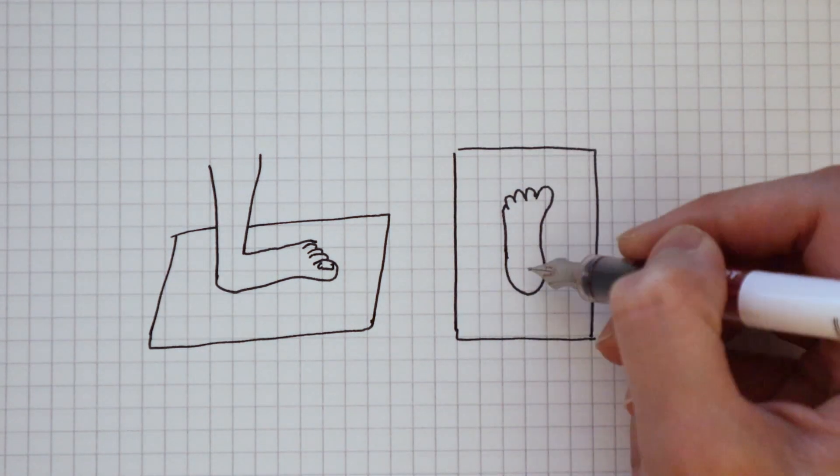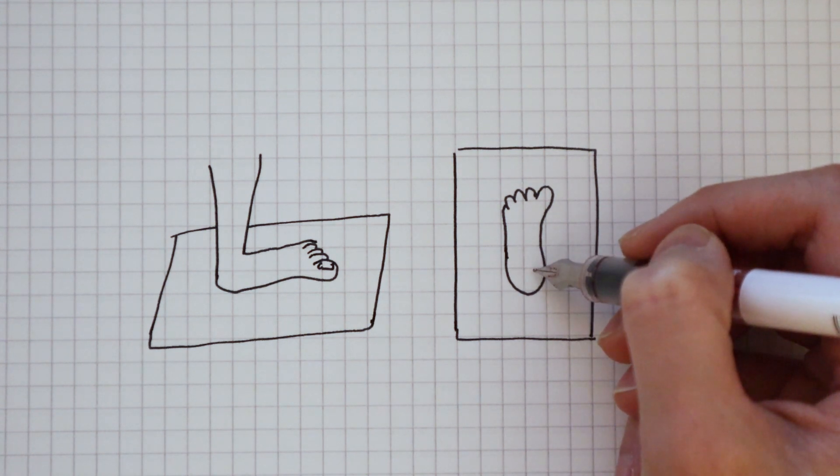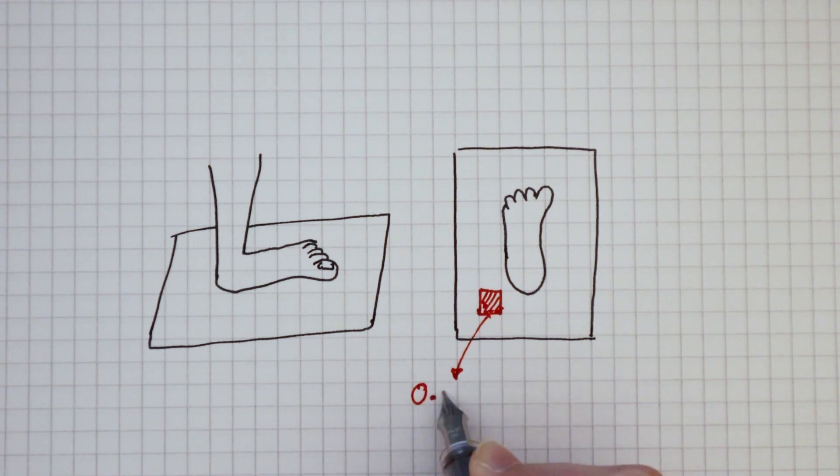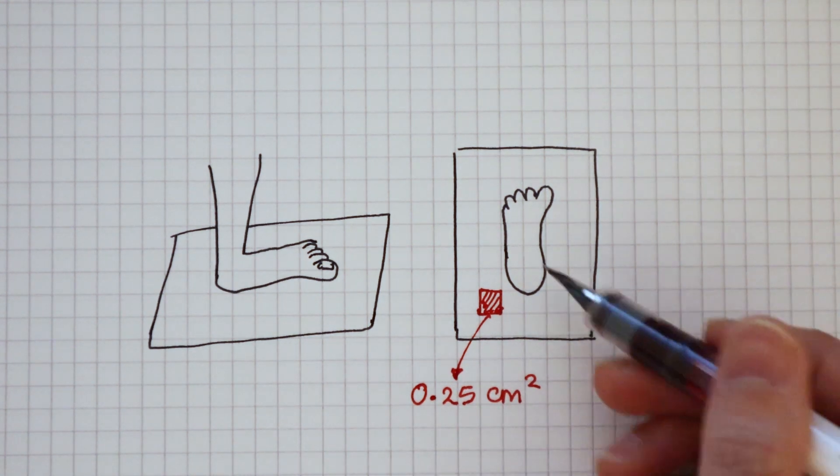To work out the area, I count how many full squares there are within the outline. If one square is 0.25 of a centimeter squared, then the area of my foot is 0.25 times the number of squares.